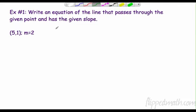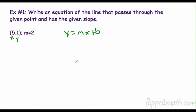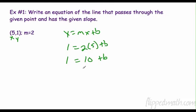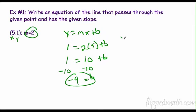Write an equation of the line that passes through the given point and has the given slope. I have an x, a y, and an m. My equation is y equals mx plus b. Plugging in: y is 1, m is 2, x is 5 plus b. Solving: 1 equals 2 times 5 is 10 plus b. Subtract 10 from both sides: b equals negative 9. So the equation is y equals 2x minus 9.